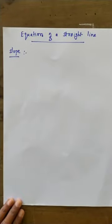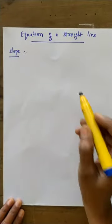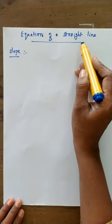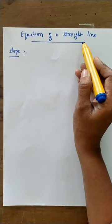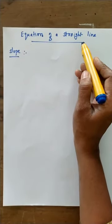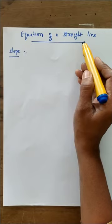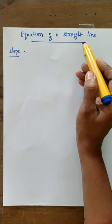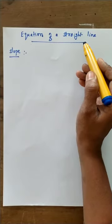Good morning students. Today's class is on equation of a straight line. Straight lines can be represented by different forms of equations, which we have to study one by one.